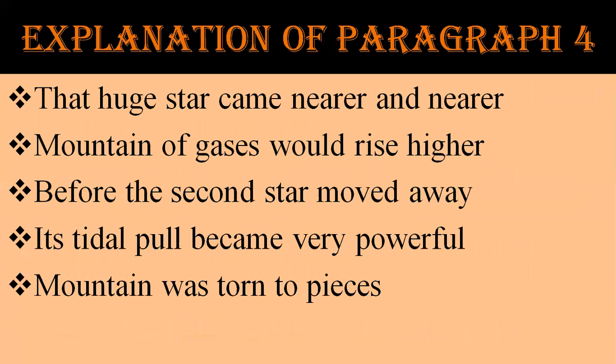As the cause of disturbance — that second, huge star — came nearer and nearer, the mountain would rise higher and higher. Before the second star began to move away again, its tidal pull had become so powerful that this mountain was torn to pieces and threw off small parts of itself into space. These small pieces have been going around the sun ever since. They are the planets, great and small, of which our earth is one.